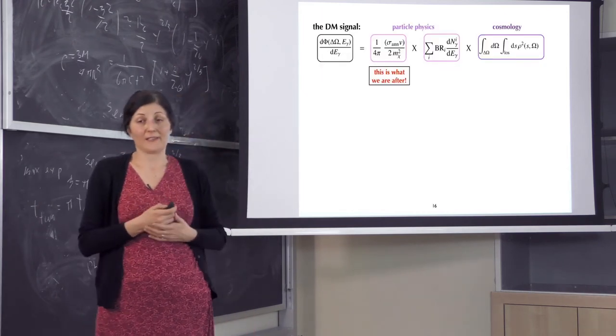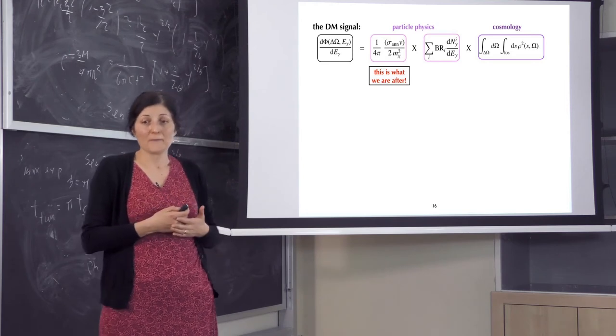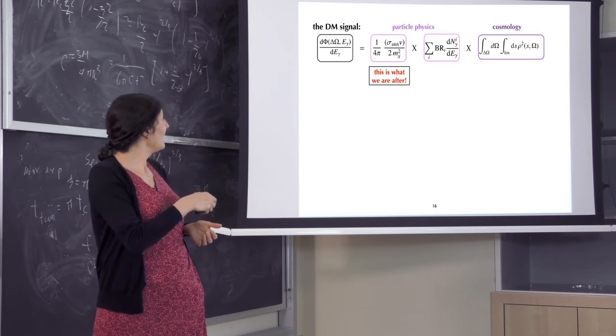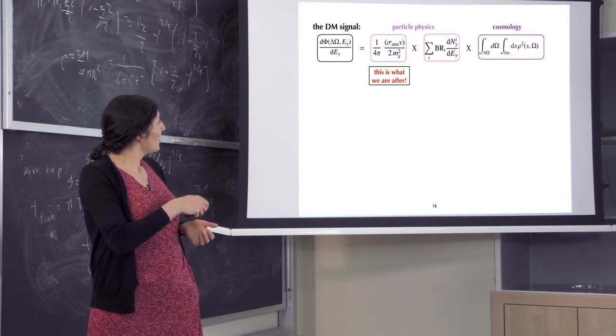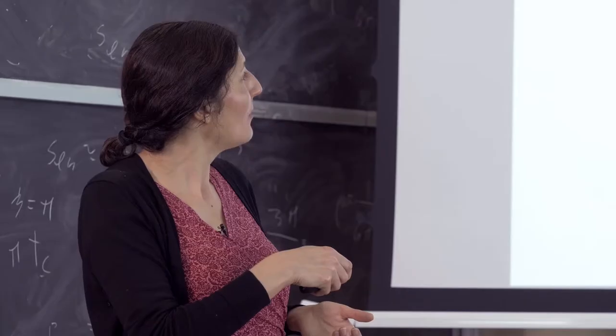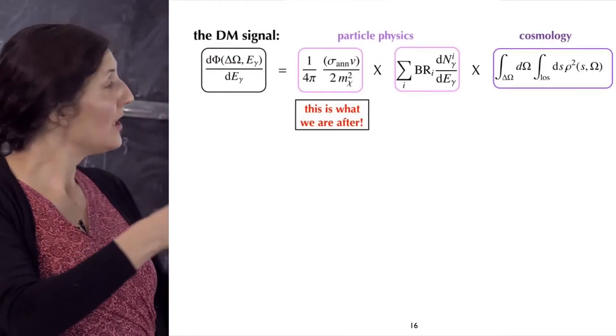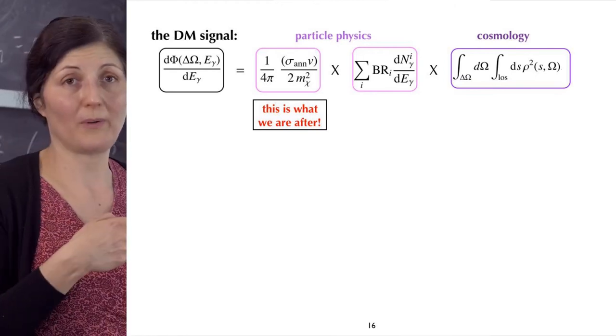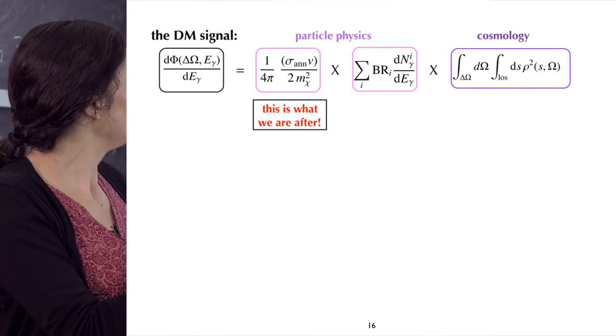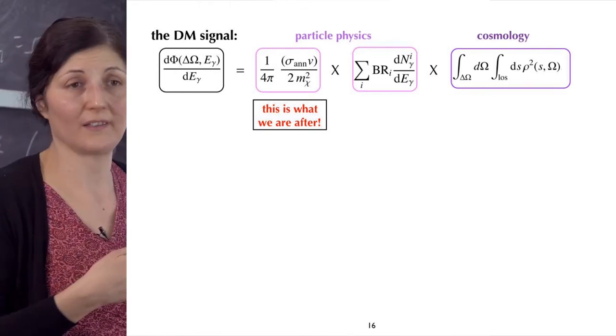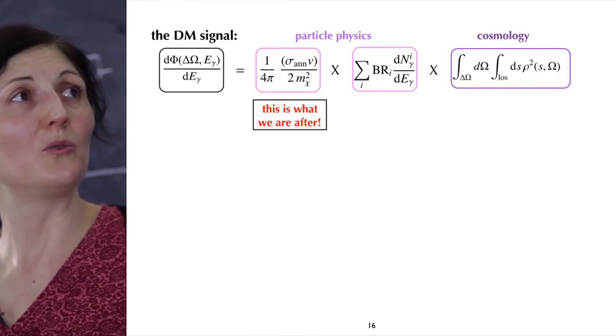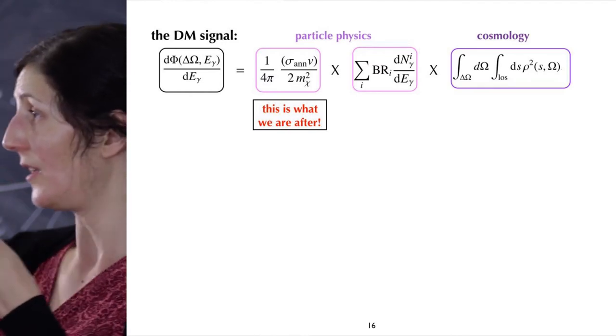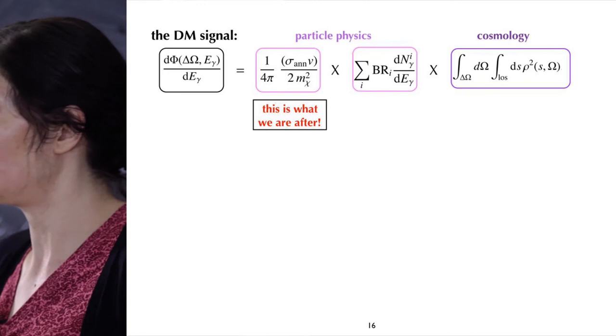Now focusing on the dark matter signal, what it is, how we think we can find it in this data. Here you see the flux of gamma rays that would come from dark matter, and what they would depend on. Let's focus first here: they would depend on how much dark matter you have along your line of sight. Basically, more dark matter you have, higher the signal. Because you need two dark matter particles to annihilate, you have the density of dark matter squared. It contributes to this integral of the amount of dark matter because two are necessary for annihilation. So the first parameter comes from cosmology: if you look at some target, how much dark matter you have along the line of sight.